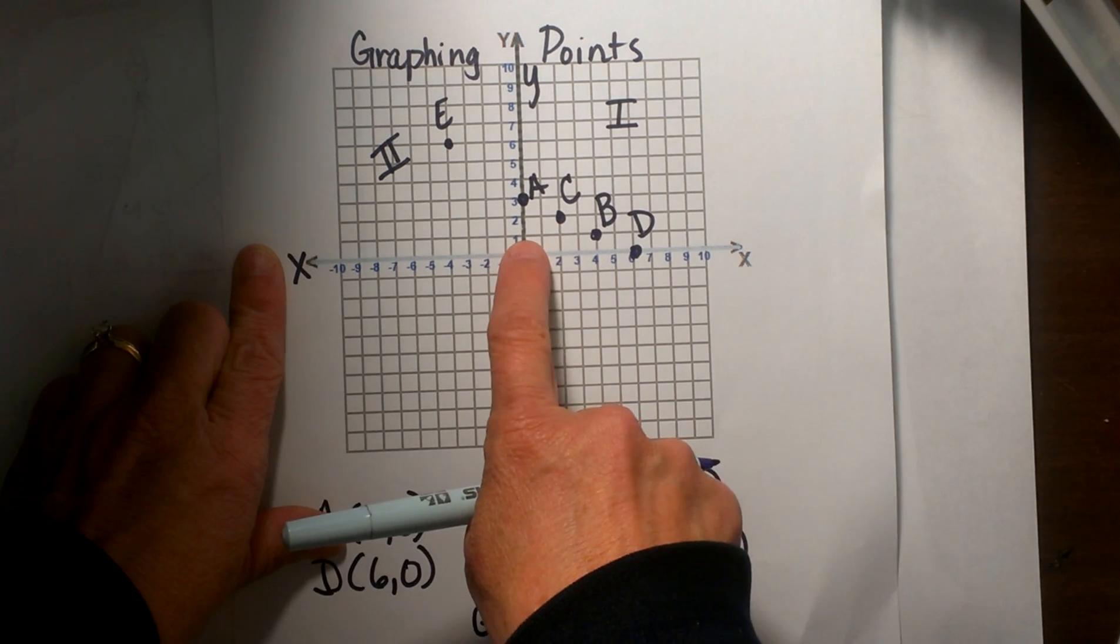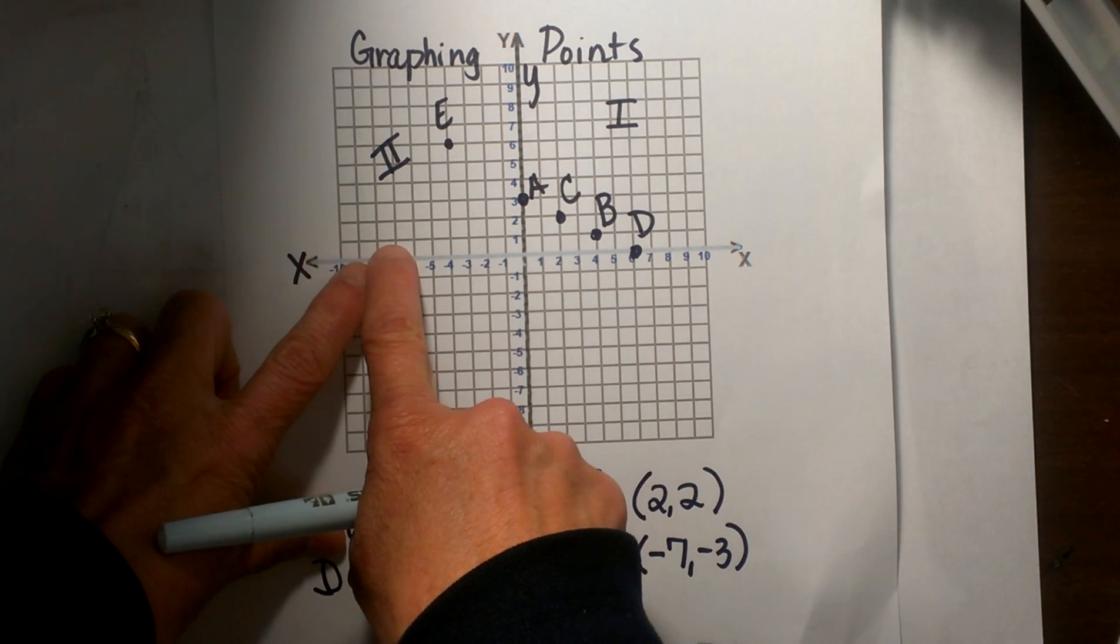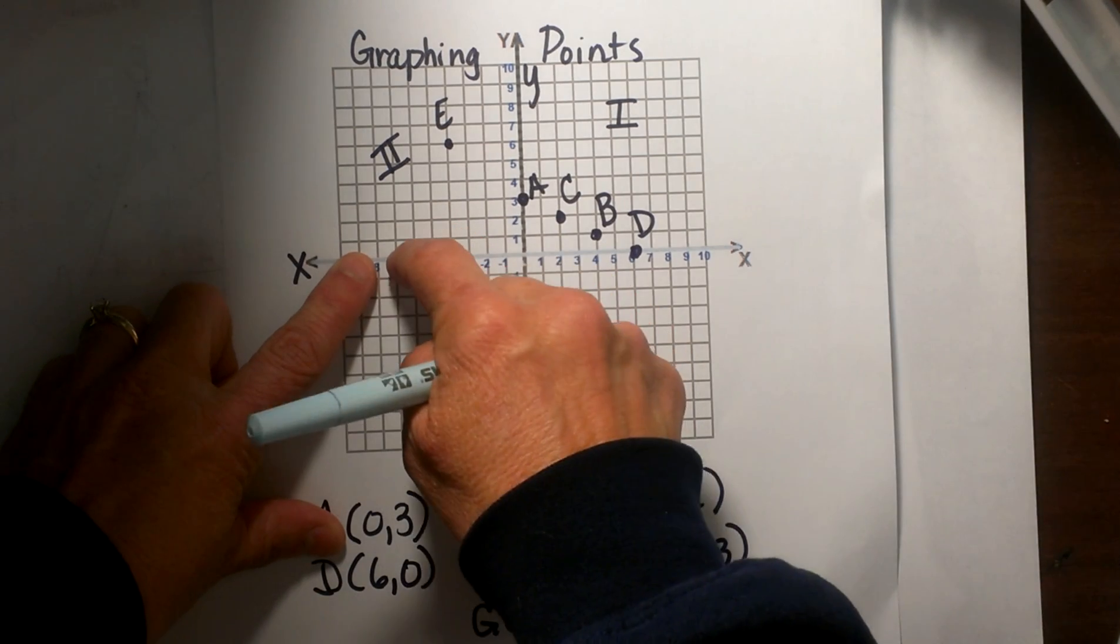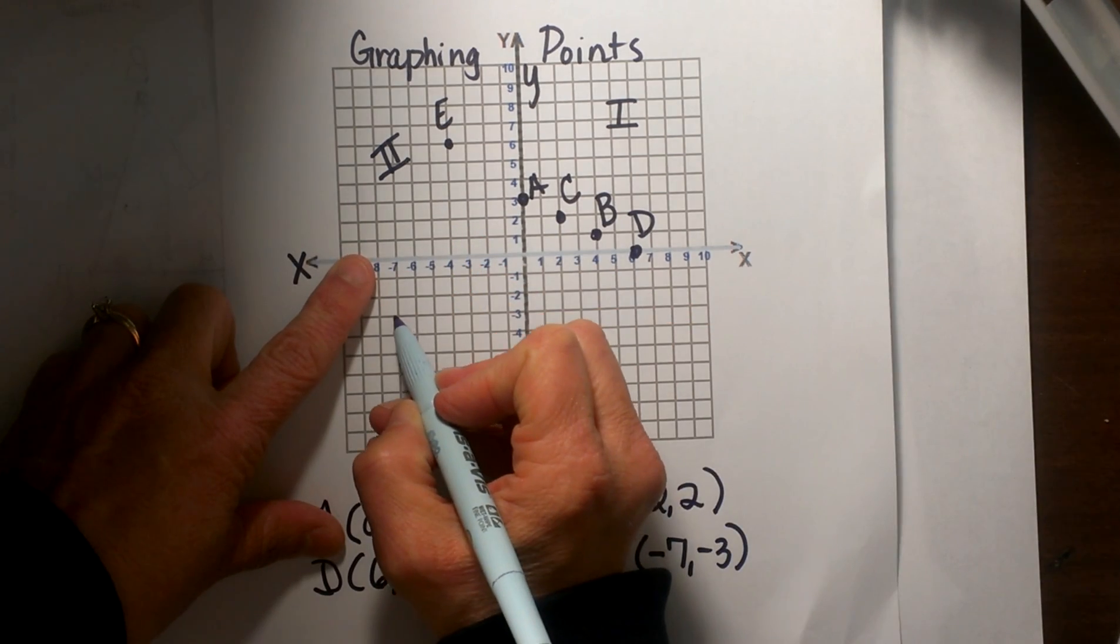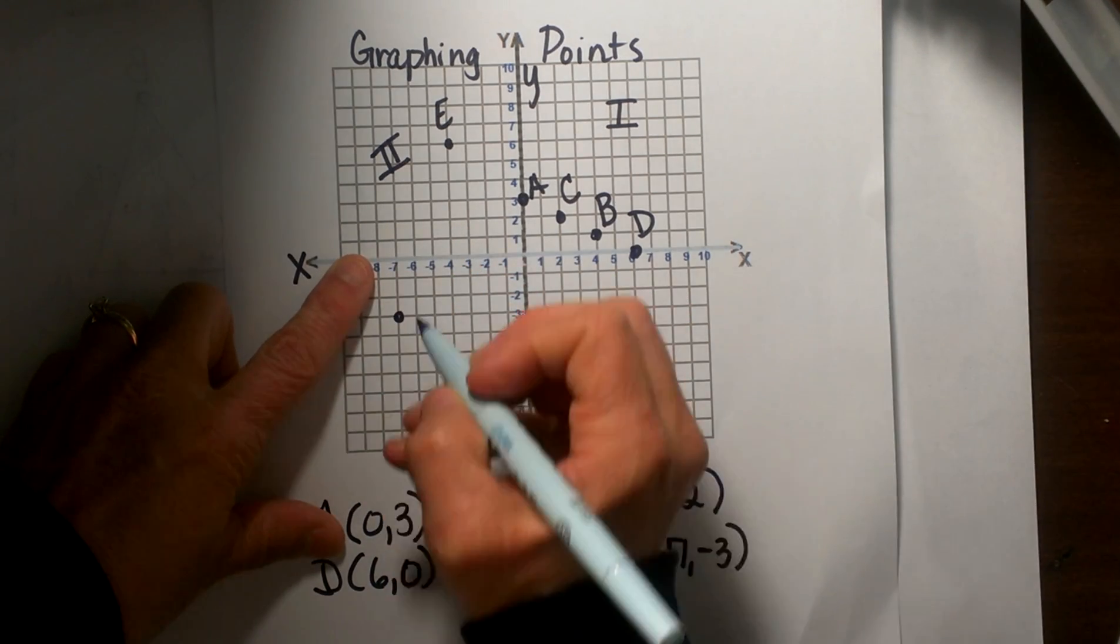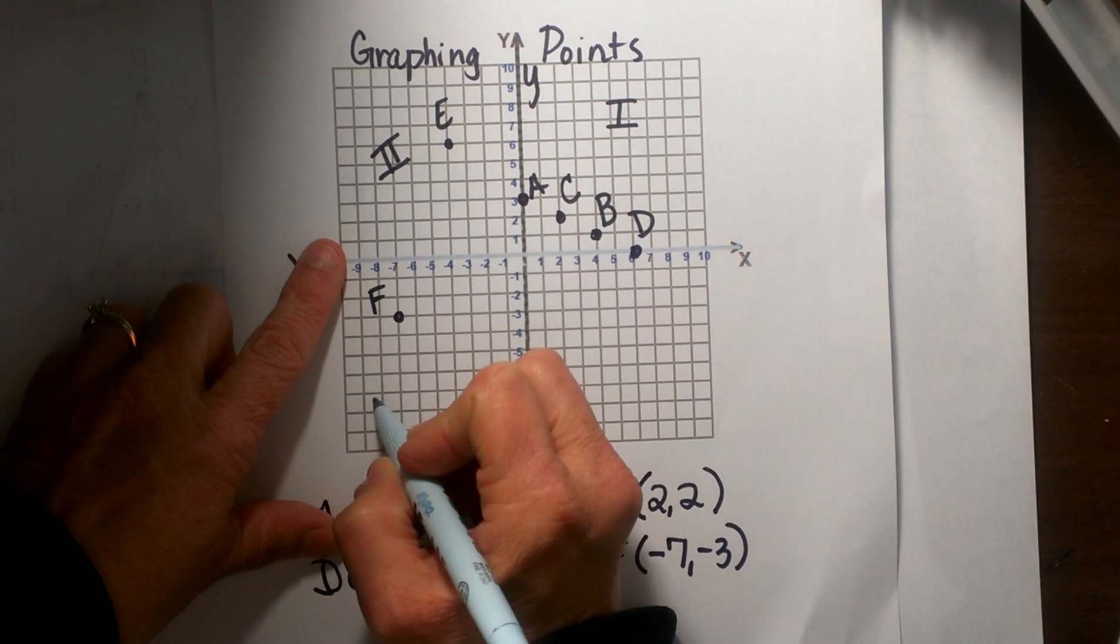F from the origin I am going to go negative 7 and then I am going to go a negative 3. So this time I am going to go down 3, so that puts F right here and this is quadrant 3.